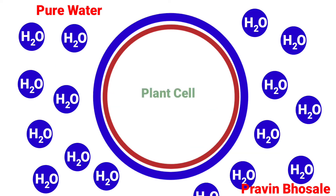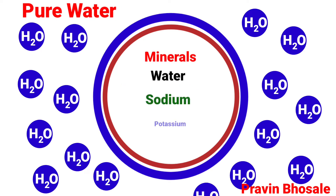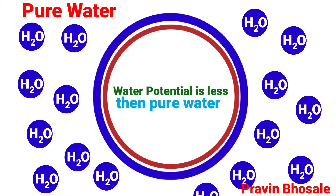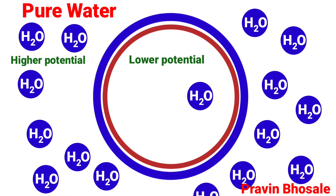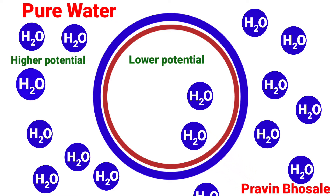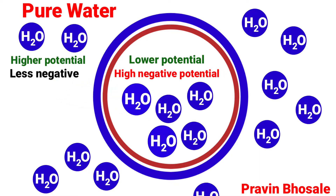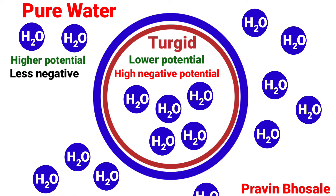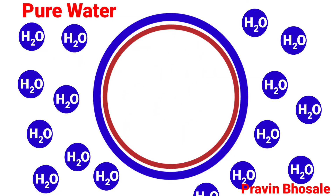If we place a plant cell in pure water, the plant cell contains minerals, water, sodium, and potassium — meaning its water potential is less than that of pure water. Water moves from higher potential to lower potential, so water will move from the pure water into the cell — from less negative to more negative potential. As a result, the plant cell will become turgid.